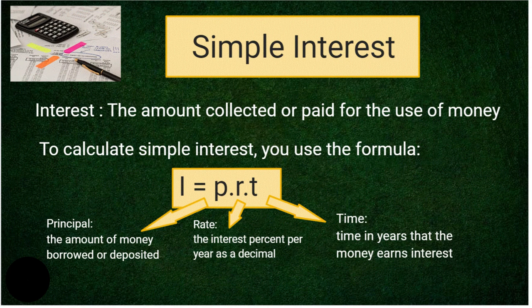To calculate simple interest, this is the formula you must remember: I = PRT. P is the principal — the amount of money borrowed or deposited. R is the rate, the interest percent per year as a decimal. T is the time in years that the money earns interest.